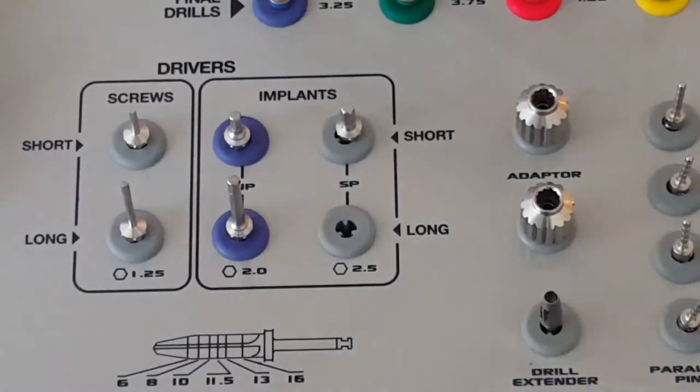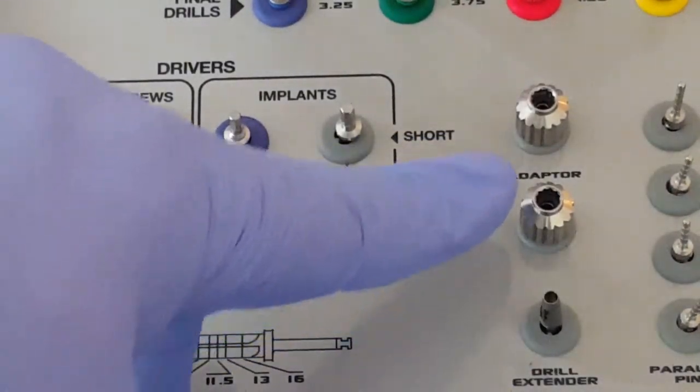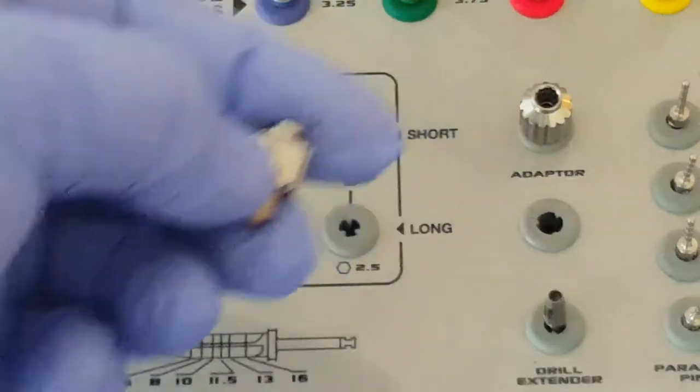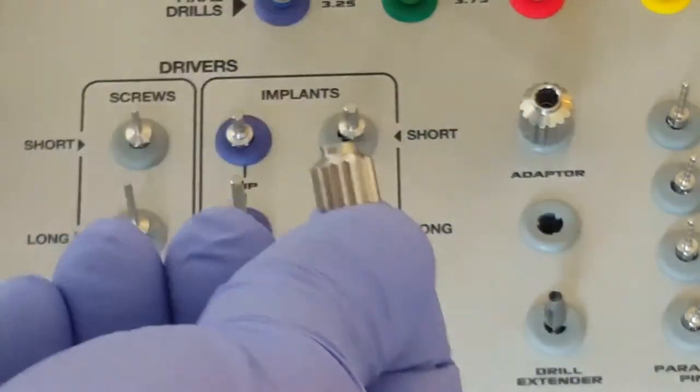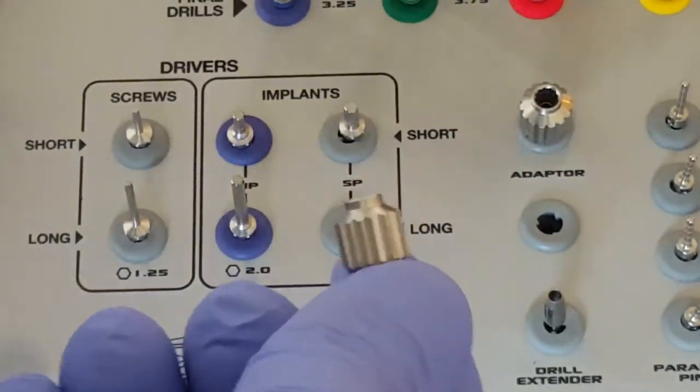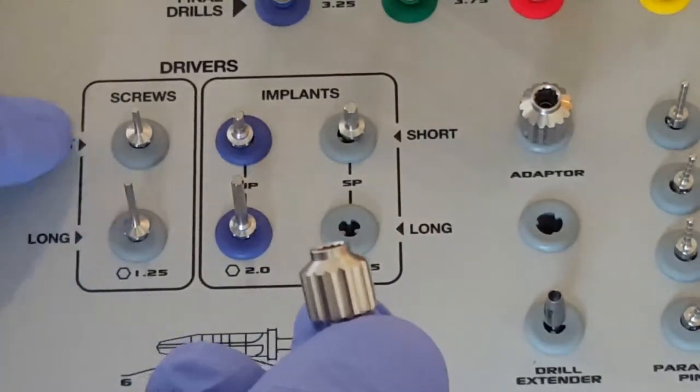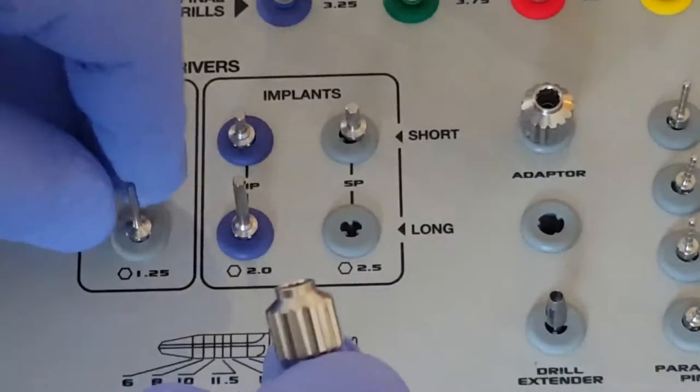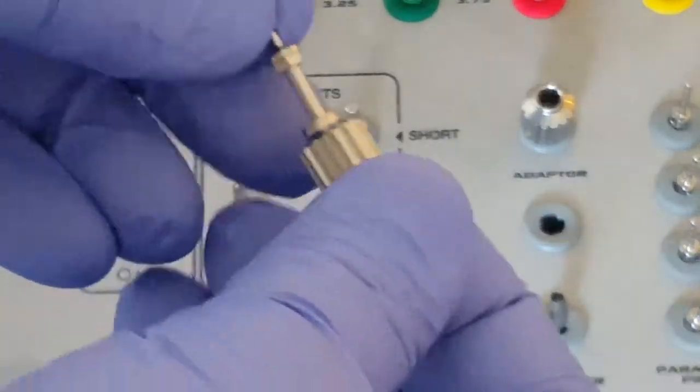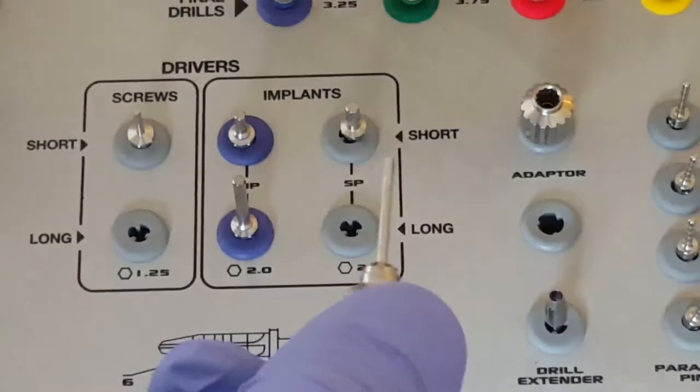When we need a screwdriver, we can take the adapter, and if it's going to be a long screwdriver, we select the long hex key, or short screwdriver, the short hex key. So we remove it and insert it into the adapter, and we've created a screwdriver.